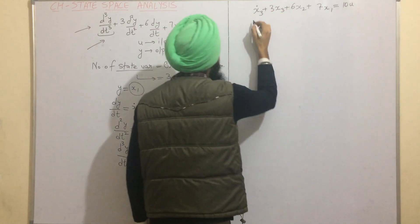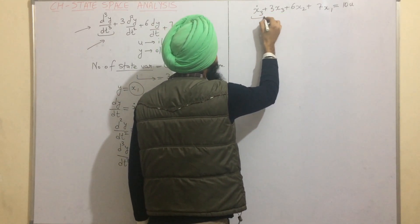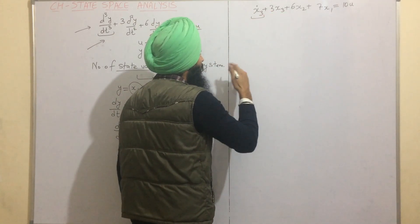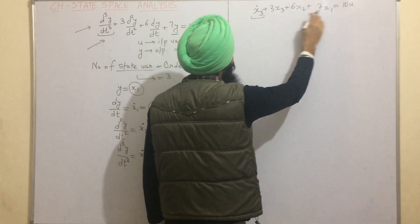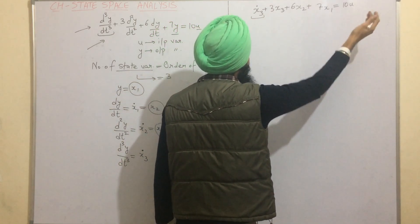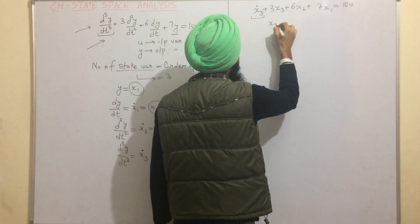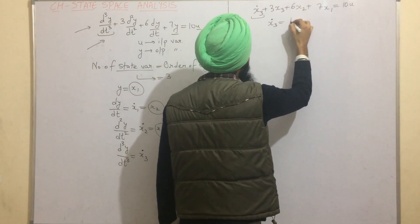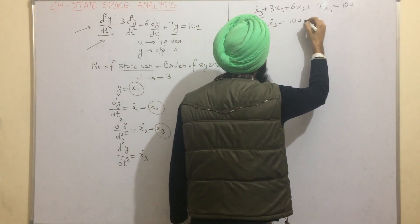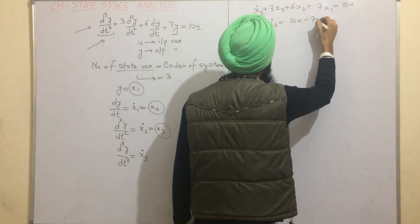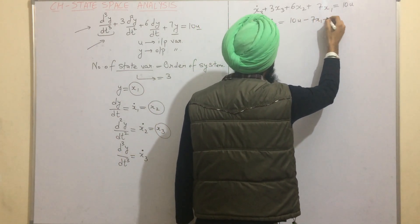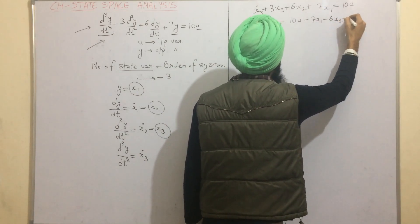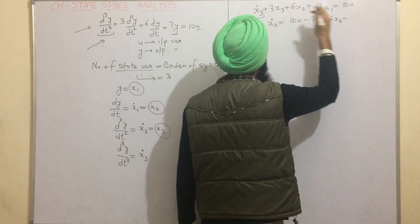Taking x3_dot to the left-hand side and moving all other variables to the right-hand side, we get: x3_dot = 10u − 7x1 − 6x2 − 3x3.